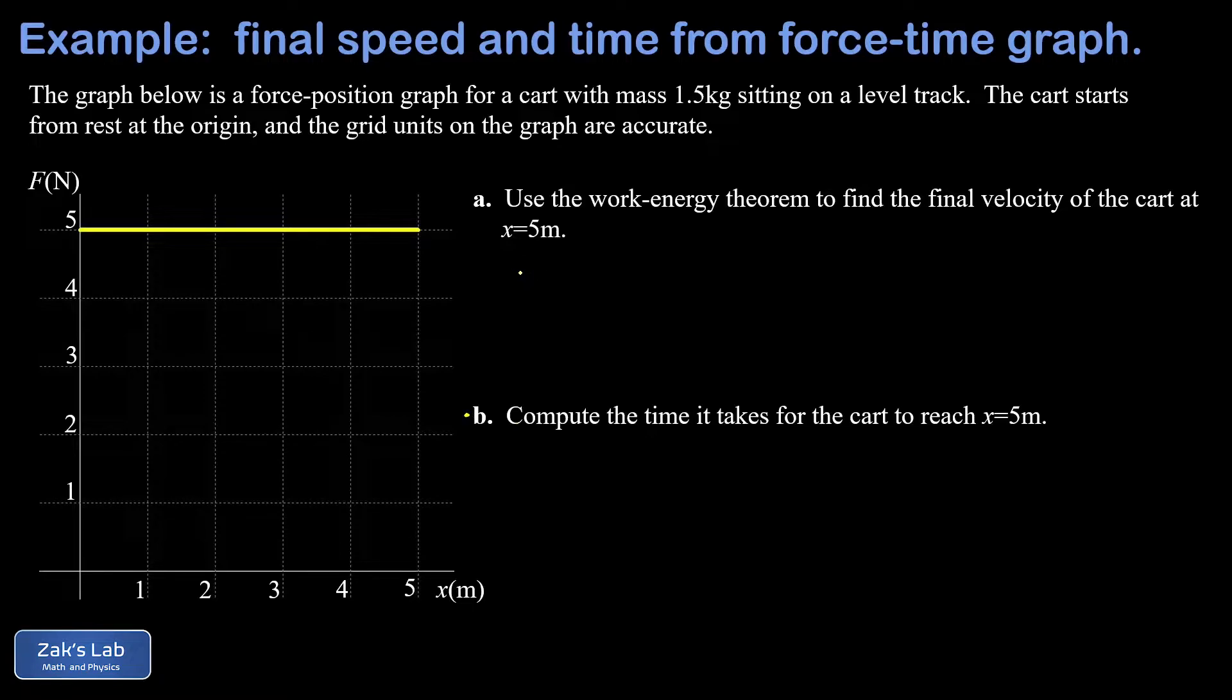So in this work energy part, well the total work done on this cart is the area bounded by the force position graph. That area is just a square - it has a height of 5 newtons, it has a width of 5 meters, and we end up with 25 newton meters or 25 joules of energy pumped into this cart.